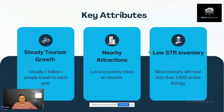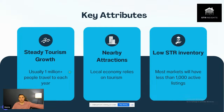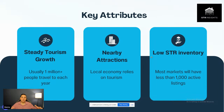Number three is low short-term rental inventory. For a region with over a million-plus people going to it per year, I want to see less than 1,000 active listings in that region. If it has more than a thousand, it could still be emerging but leaning more toward the mature side. Remember the definition — it's in the process of becoming a mature destination.